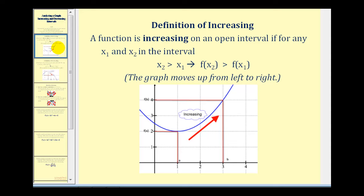A function is increasing on an open interval if for any x sub one and x sub two in the interval, if x sub two is greater than x sub one, then f of x sub two is greater than f of x sub one. So if x sub two is to the right of x sub one, f of x sub two is going to be above f of x sub one. So the graph would move up from left to right as we see here on this interval.